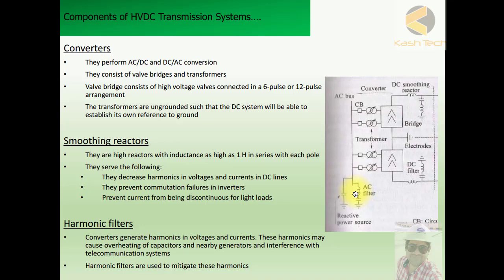The smoothing reactors serve the following purposes: they decrease harmonics in voltages and currents in DC lines, they prevent commutation failures in the inverter, and they prevent current from being discontinuous for light loads. They also limit fault current because when a phase-to-ground fault occurs, the reactor impedance is in the fault path and reduces the fault current.